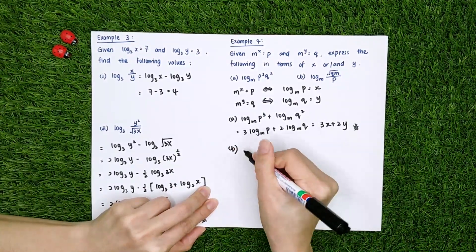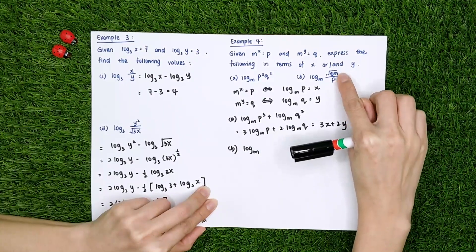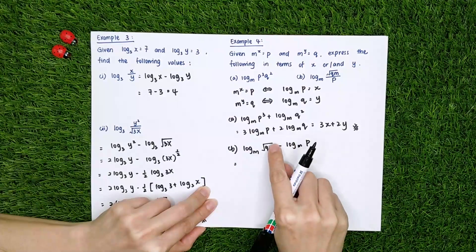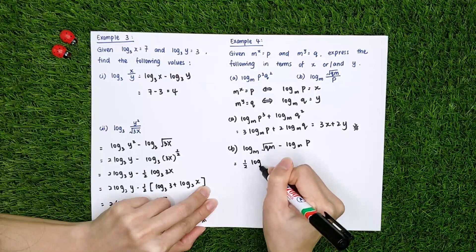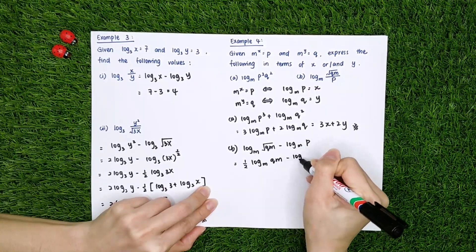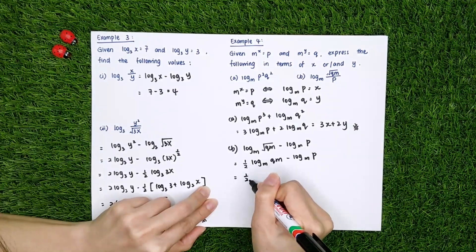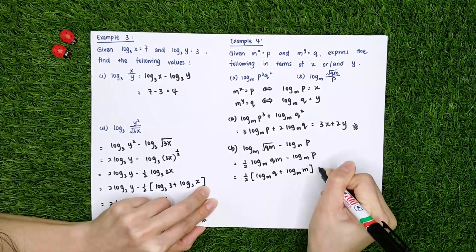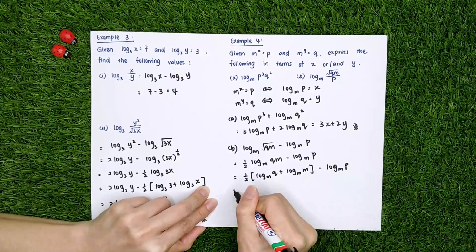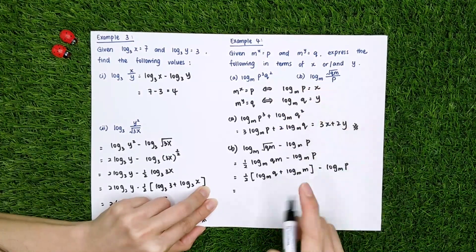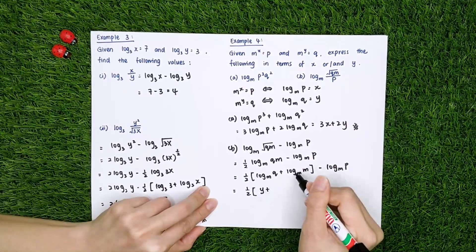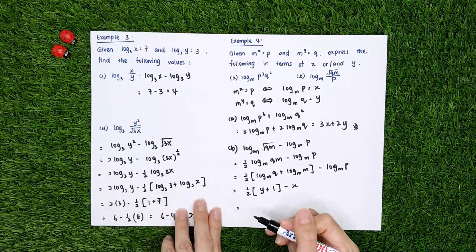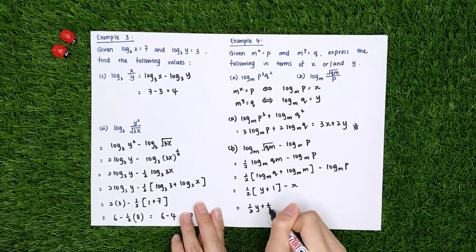Part B: log_m(√(qm) / p). Since it is a division, split it up. Square root is power of half, so: (1/2)·log_m(qm) - log_m(p). Then split qm: (1/2)[log_m(q) + log_m(m)] - log_m(p) = (1/2)(y + 1) - x = y/2 + 1/2 - x.